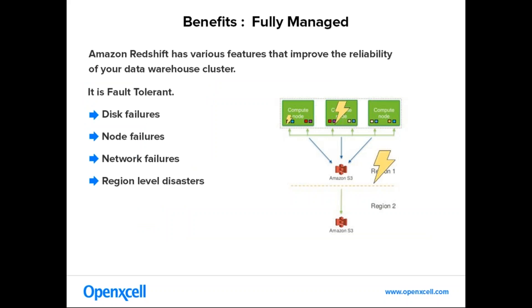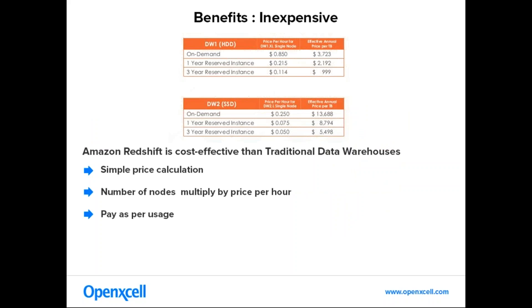Amazon Redshift is fully managed because it is fault tolerant. It supports handling disk failures, network failures, node failures and region-level disasters to save the data. It keeps multiple copies of data — it stores on the original node, creates a replica on another node within the cluster, and also creates automated backups on Amazon S3 in an incremental way. It manages incremental backups, restores and resizing the nodes for a cluster, and provides lots of features to manage data with zero admin effort.